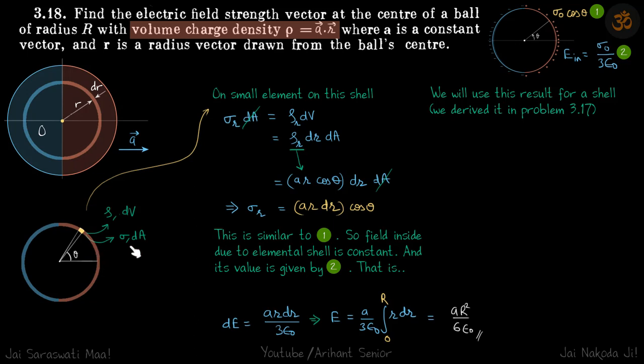Now for this shell, r is constant, we are only talking about the shell, we are not talking about the whole thing. What is varying is theta. So now the distribution of charge on this charged shell is going to look similar to this because that is also constant into cos theta.